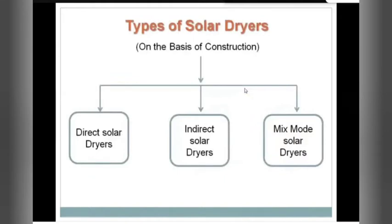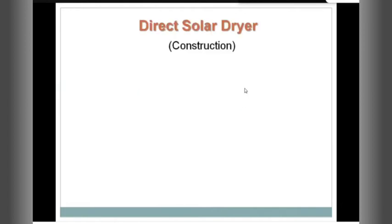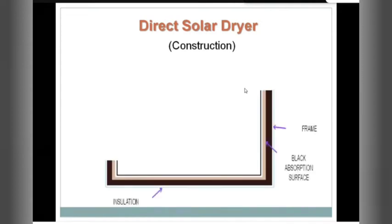To satisfy these two conditions, we construct solar dryers in specific ways. On the basis of construction, we divide solar dryers into three categories: first, the direct solar dryer; second, the indirect solar dryer; and third, the mixed mode solar dryer. The direct solar dryer talks to the sun directly — it doesn't allow anyone to interrupt in between.